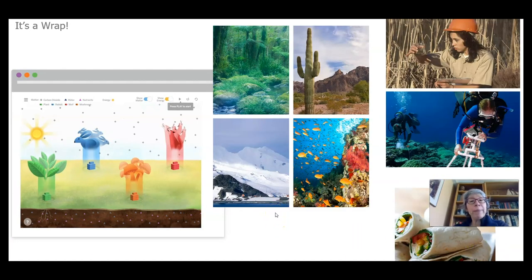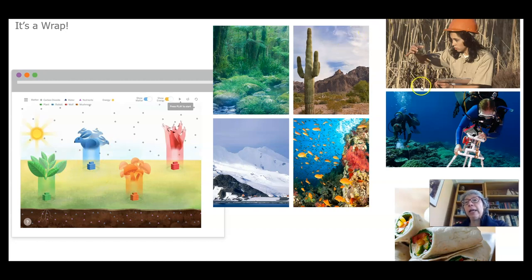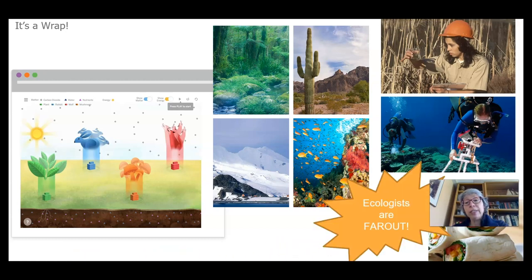So we're going to wrap this one up. What we've done today is we looked at different ecosystems and we saw a simulation that modeled what happens in an ecosystem — how things work together and what happens when you remove one of the pieces. We've learned that ecologists are people that study different ecosystems. The next time I see you, we're going to take on a situation that ecologists need to work on in the Costa Rican rainforests. Bye for now, take care.